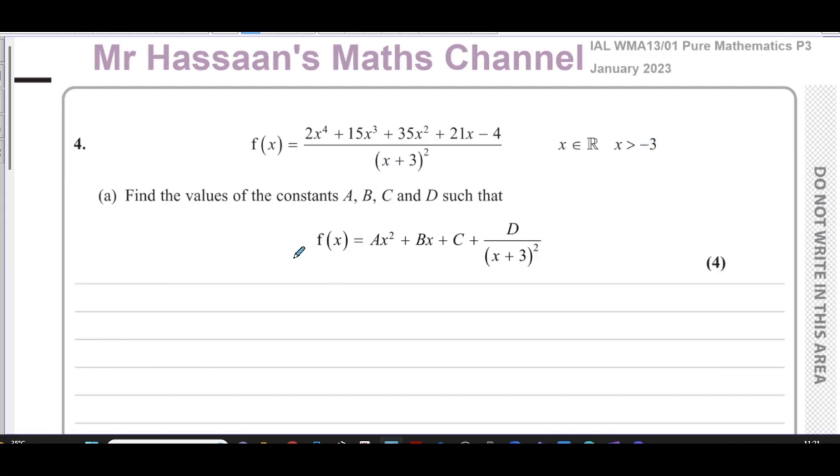We have to find the values of the constants A, B, C and D such that f(x) equals Ax squared plus Bx plus C plus D over (x plus 3) squared. So this is basically an improper fraction and we have to change this improper fraction into a mixed number. There are numerous ways to do this.